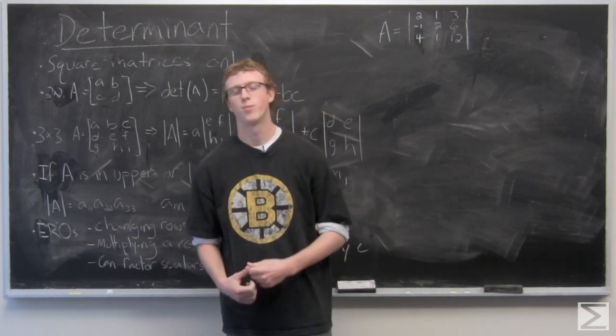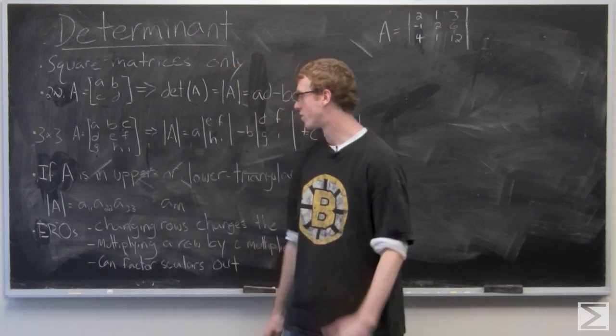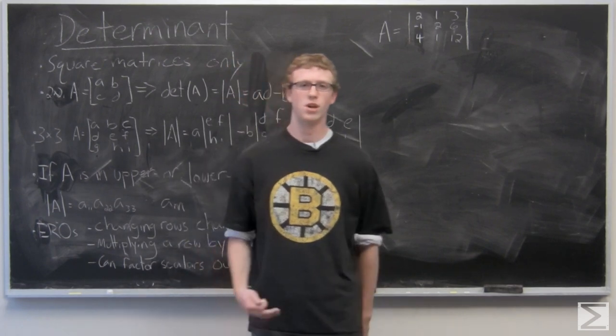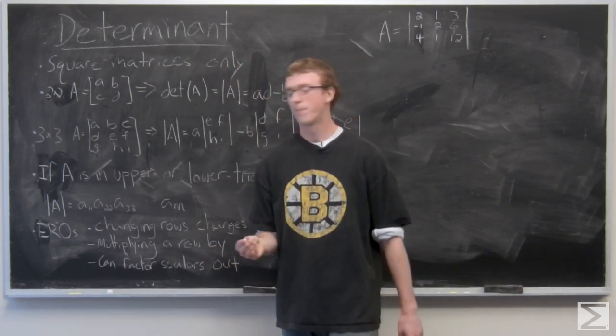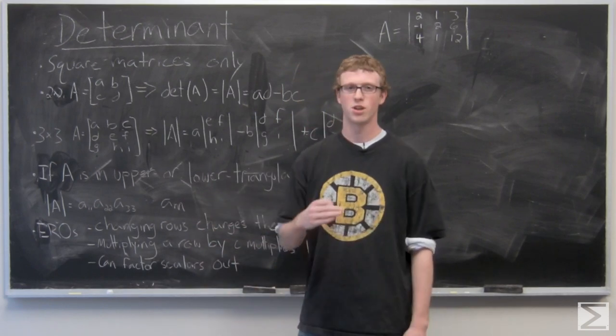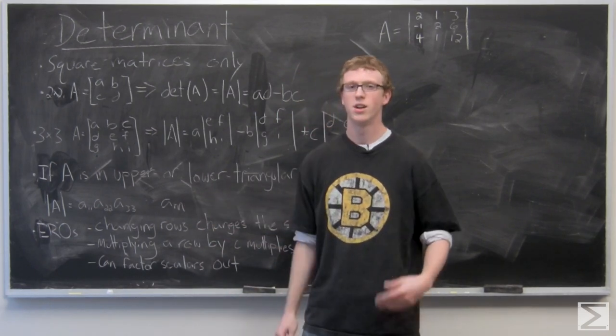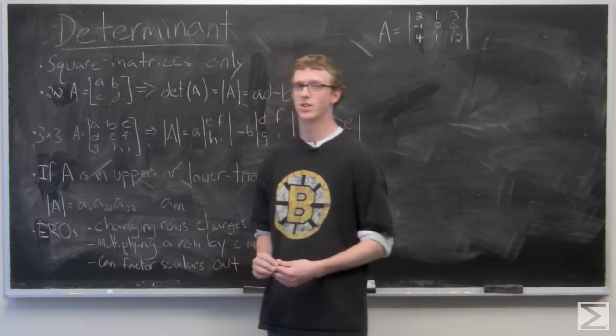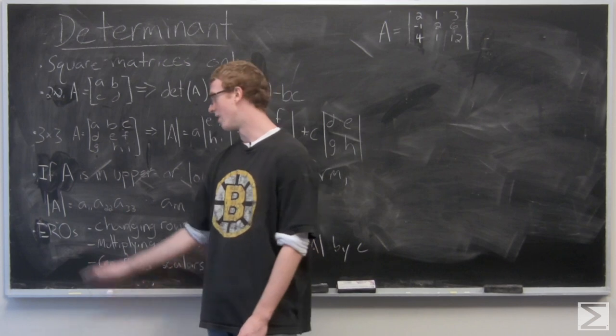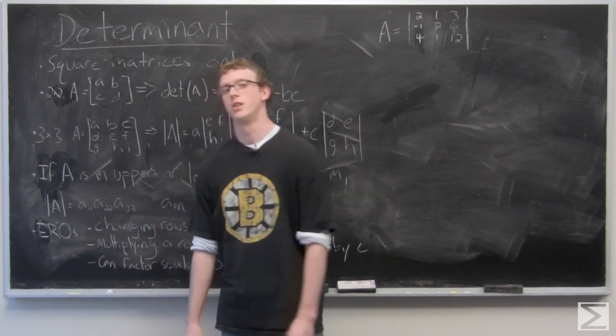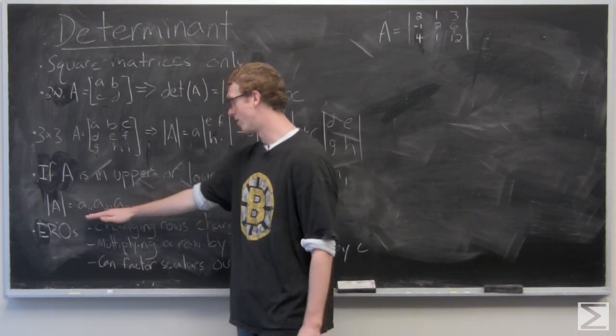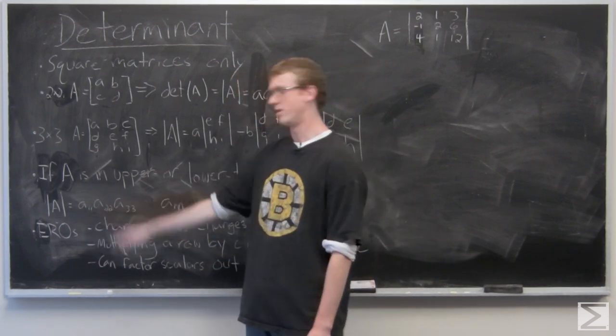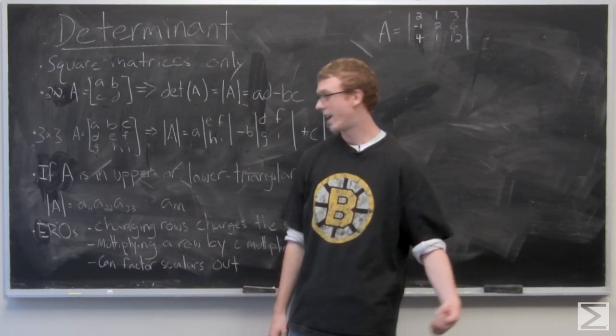You can also find the determinant of the matrix if it's in lower or upper triangular form, which means all zeros below the main diagonal for upper triangular form, or all zeros above the main diagonal for lower triangular. So essentially what that means is that if it is in upper or lower triangular form, the determinant of A is just all the entries on the diagonal multiplied. So A11 times A22 times A33 and so on.